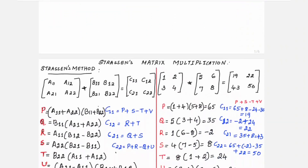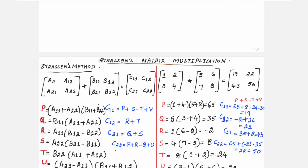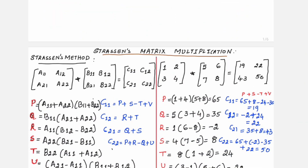Now let us see Strassen's multiplication method and how it is different from the traditional method. Strassen's multiplication method is demonstrated here for a 2×2 matrix. We have the elements for matrix A, elements for matrix B, and this is the resultant matrix. In order to compute the resultant matrix C, Strassen's makes use of a specific formula.